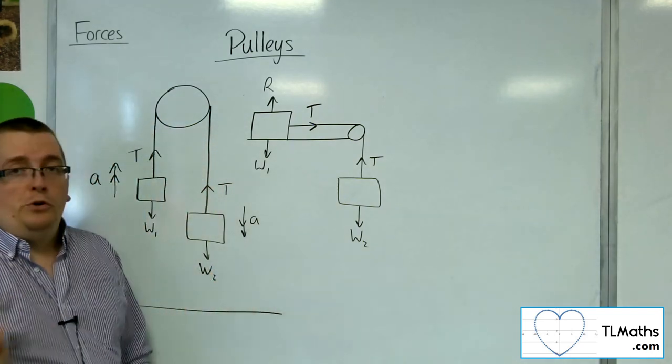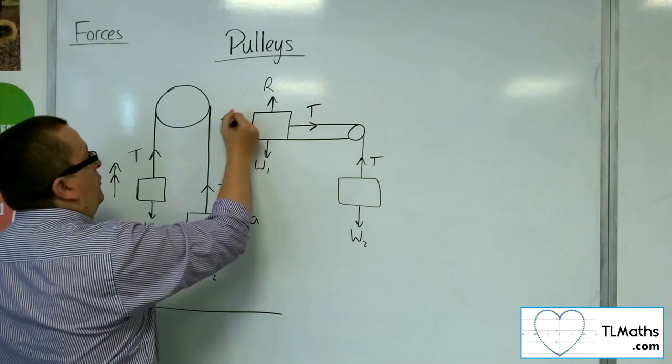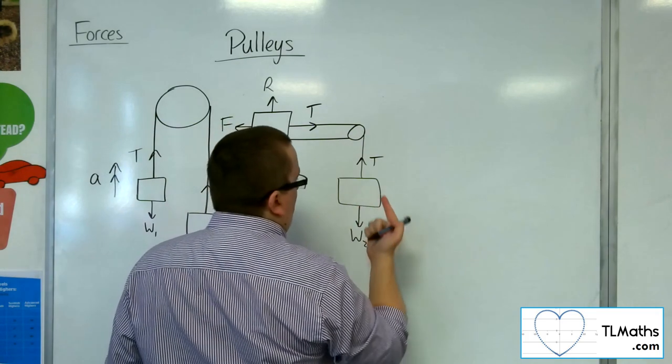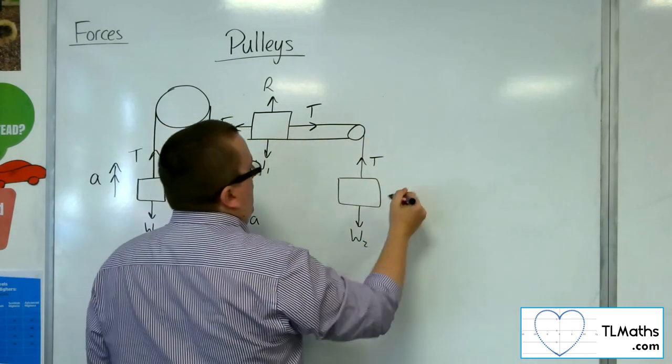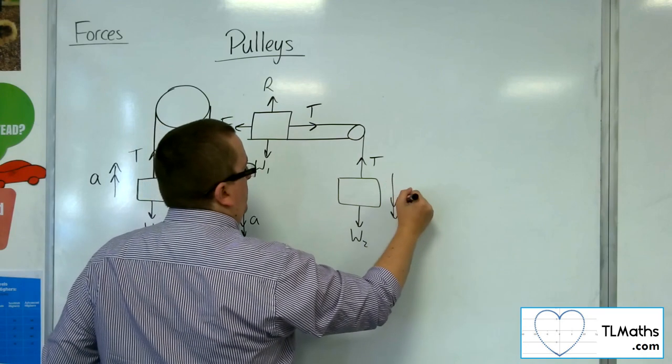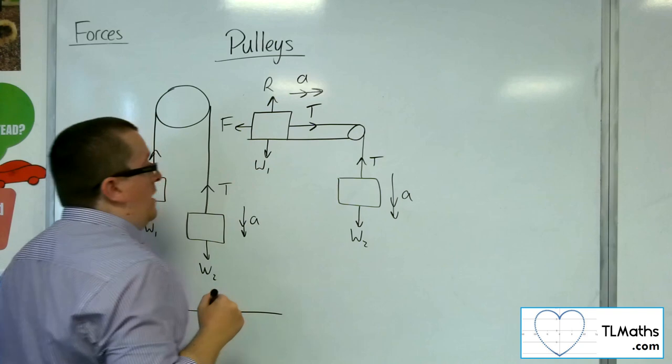If the table is smooth, then there won't be a frictional force. If the table is rough, then there might be a frictional force working against that direction of motion. And if this particle is heavier than this one, otherwise it won't be a very interesting situation, then this will be accelerating downwards, this will be accelerating towards the right.